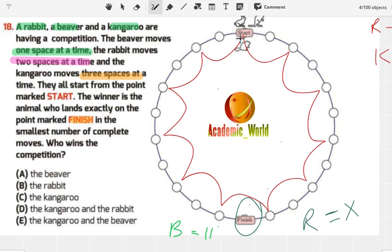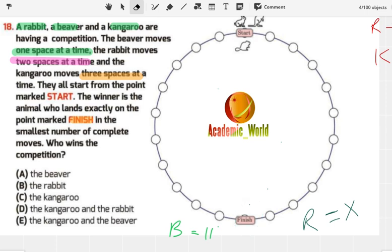Now look at the kangaroo. The kangaroo moves three spaces, so it should be like... let me write it.